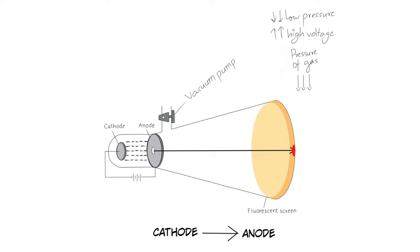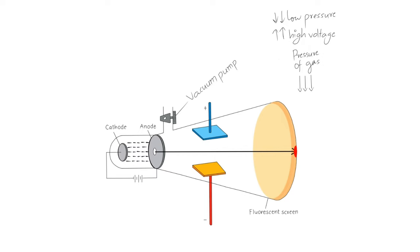As these rays travel from cathode to anode, they are called cathode rays. When the electric field is applied perpendicularly to the path of cathode rays, they deflect towards the positive plate. As we know, opposite charges attract each other. This shows that cathode rays have negative charge.